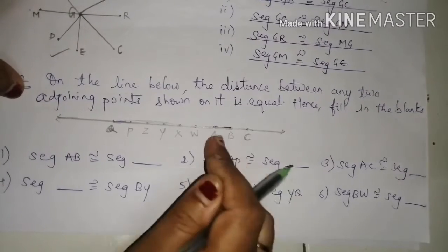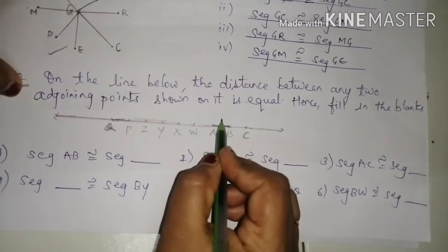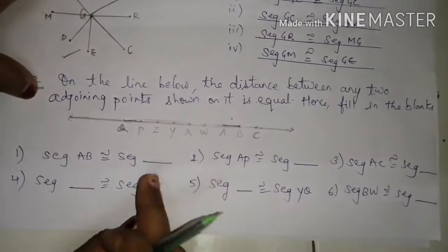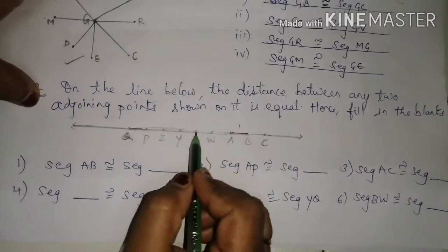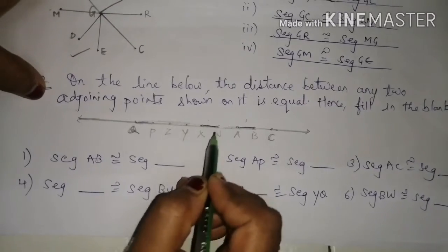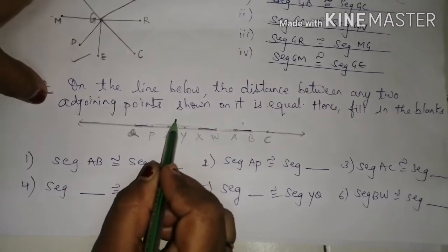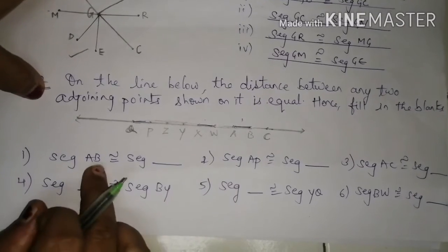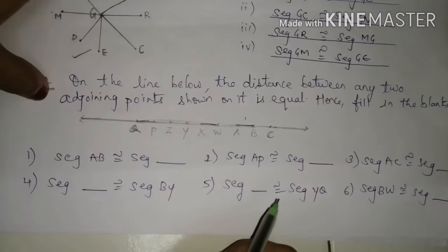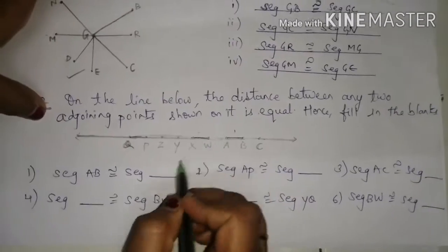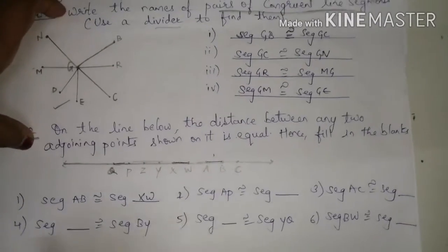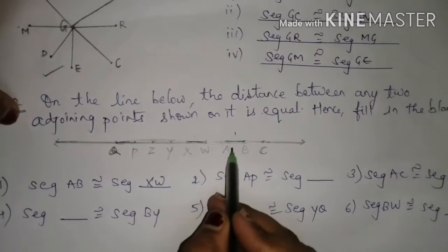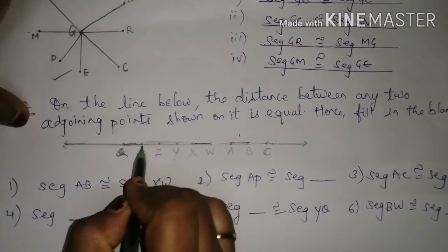Between A and B the distance is 1 unit, so you can take any two points whose distance is also 1 unit — XW, ZY, or QP all work. I will write XW. For the second blank: segment AP is congruent to segment blank. From A to P, count the distance units: 1, 2, 3, 4, 5 — that is 5 units.